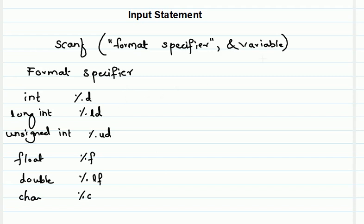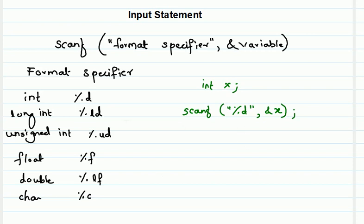For example, if I want to scan the value of an integer variable x — say int x — and I want to input a value and store it in x, I write: scanf("%d", &x). Since x is of type integer, the format specifier is %d, followed by a comma, ampersand, and the variable name. The reason for the ampersand sign will be covered when we study pointers — for now, follow it as part of the syntax.